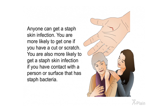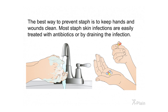Anyone can get a staph skin infection. You are more likely to get one if you have a cut or scratch, or if you have contact with a person or surface that has staph bacteria. The best way to prevent staph is to keep hands and wounds clean. Most staph skin infections are easily treated with antibiotics or by draining the infection.